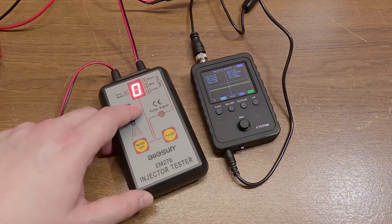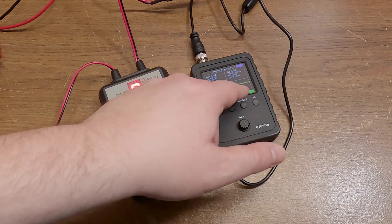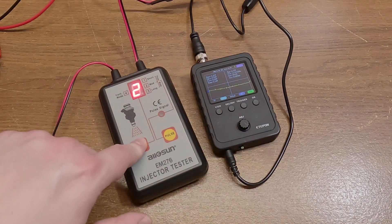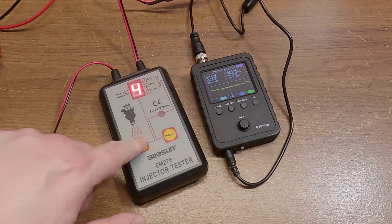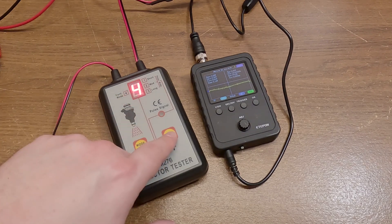As soon as we turn on the injector tester, we get some noise coming in on the oscilloscope. Let's set the mode to continuous. There's number four and hit pulse. Obviously we need to adjust, so right now it's going off the scale.